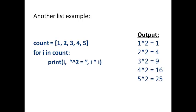So our output, as you can see on the right, one squared equals one, two squared equals four, and so on. So five iterations through the loop.